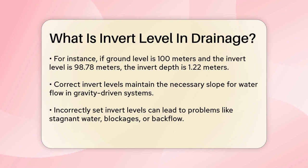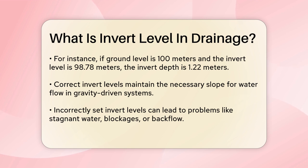The invert level plays a vital role in maintaining the correct slope for proper water flow. In gravity-driven drainage systems, the pipe must be sloped to ensure water flows in the right direction. If the invert level is set too high or too low, it can lead to issues like stagnant water, blockages, or even backflow. For instance, in sewer systems, incorrect invert levels can cause sewage to back up, leading to serious health and environmental problems.